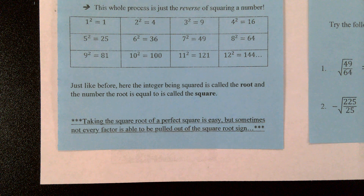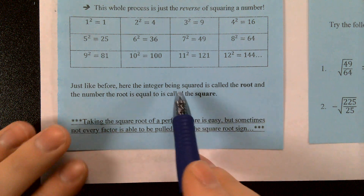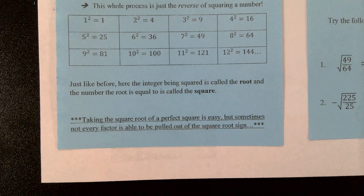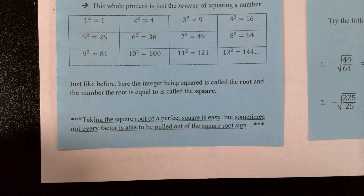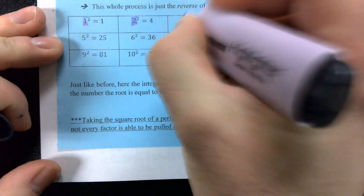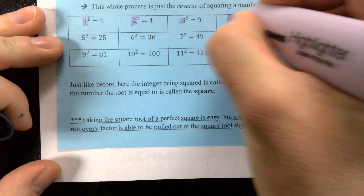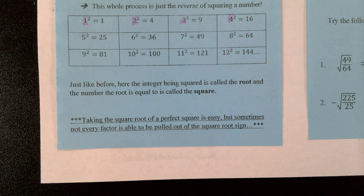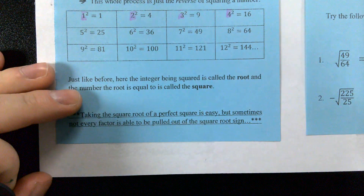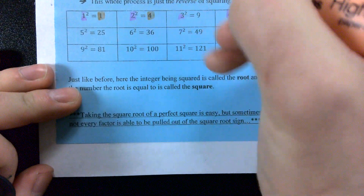Just like before, the integer being squared is called the root — so that's 1, 2, 3, 4, like that. Those are the roots. And the number that those roots are equal to is called the square.